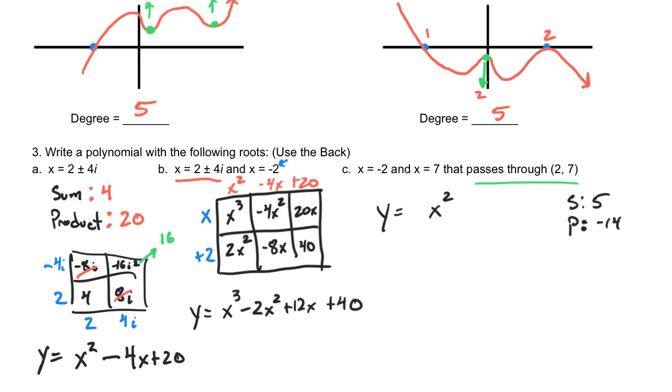So, this is going to be x squared minus 5x minus 14. And that would be the general equation that goes through these two roots, but I want the specific one that goes through 2, 7.